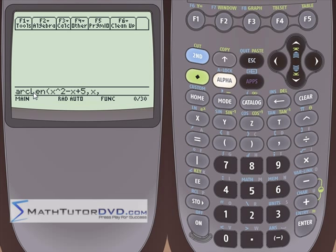x is equal to lower bound, x is equal to upper bound. So let's say we're going to do x is equal to 1, x is equal to 5.